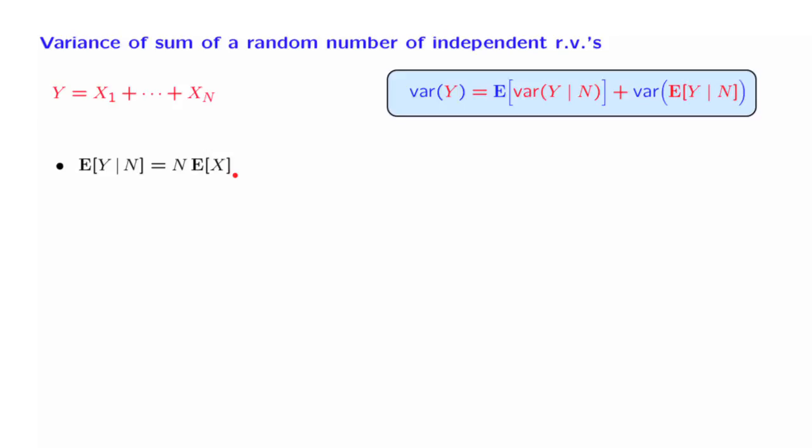Using this information, we can now calculate this term, the variance of the conditional expectation. What is it? It's the variance of capital N times the expected value of X. Now the expected value of X is a constant, and when we multiply a random variable with a constant, that multiplies the variance with the square of that constant.